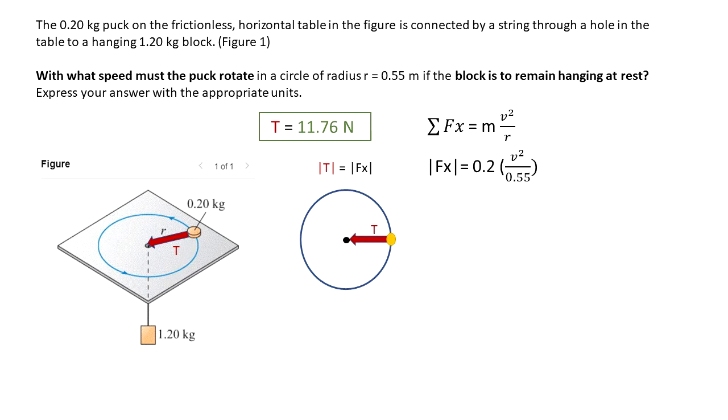We know that that force, that the centripetal force is equal to the tension. We calculated the tension before. Then we say that the magnitude of that force is equal to 0.2 v squared over the radius that was given in the problem.